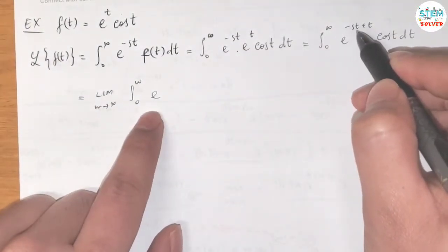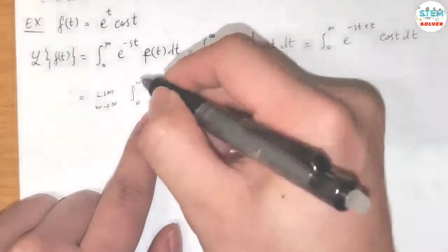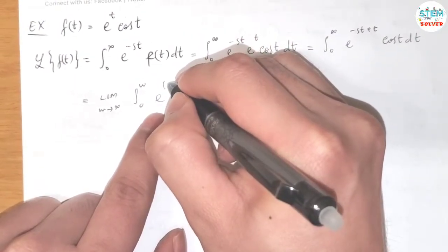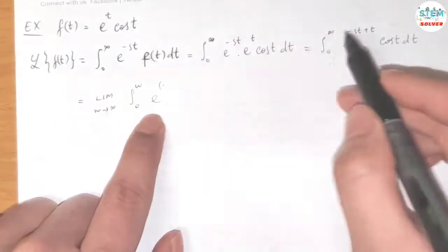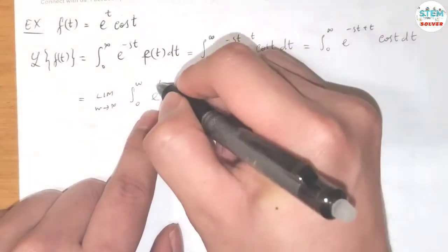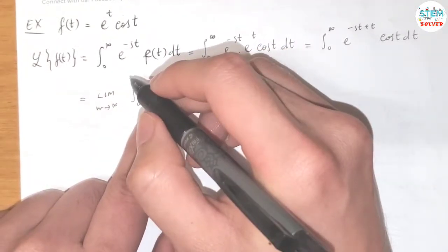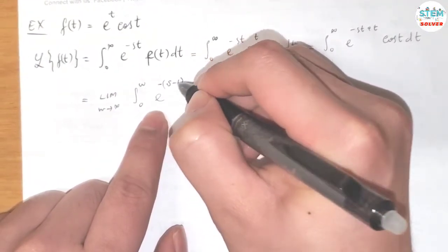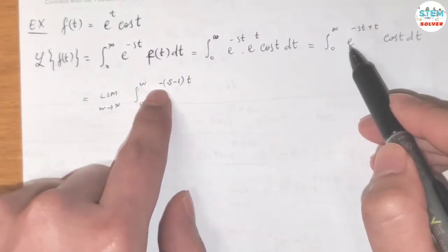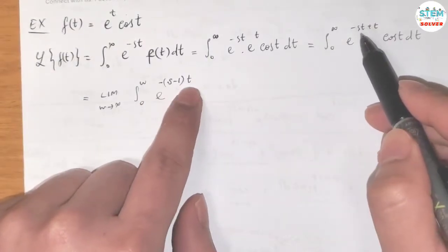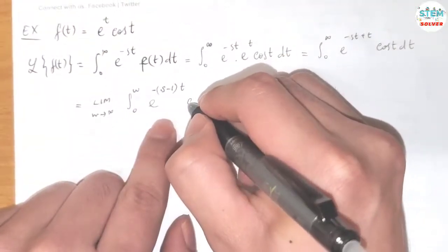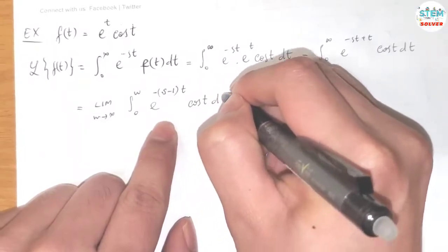For this exponent, I'm going to factor out the t, so in the exponent I have negative (s minus 1) times t. So this equals the limit as w goes to infinity of the integral from 0 to w of e^(-(s-1)t) · cos(t) dt.